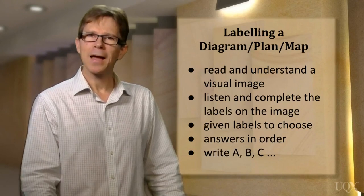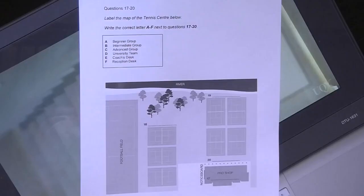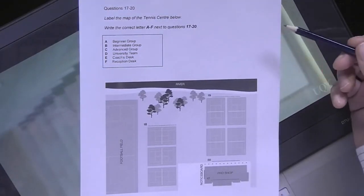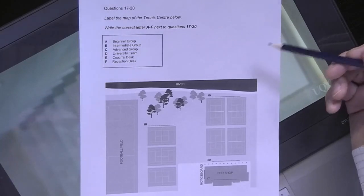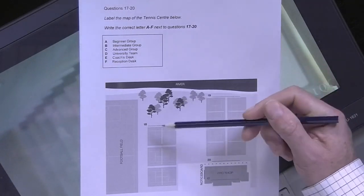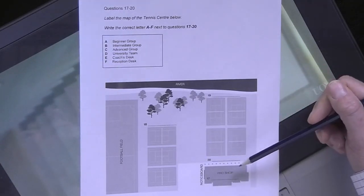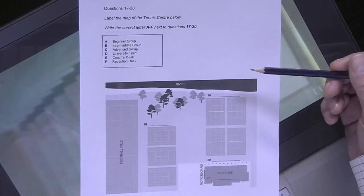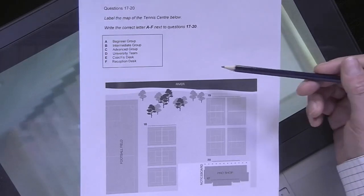Let's have a look at how to do an example. Before you listen, the first thing you should do is use the preparation time to look at the visual and work out what it represents. So, in this example, we can see that it's a map, and we can see that these are the locations on the map. And it represents the layout of a tennis centre.